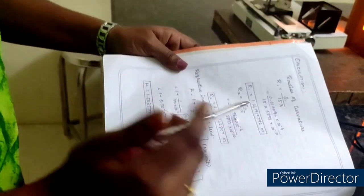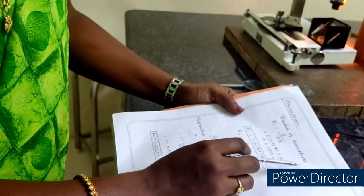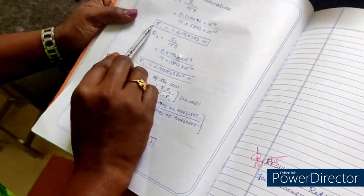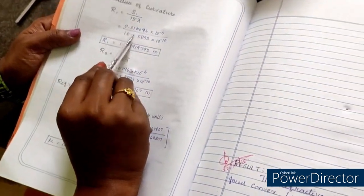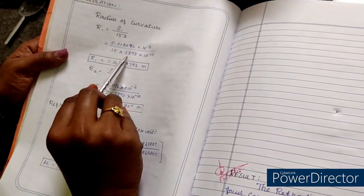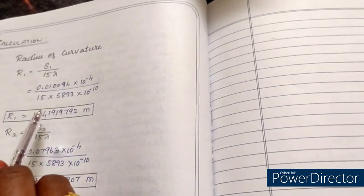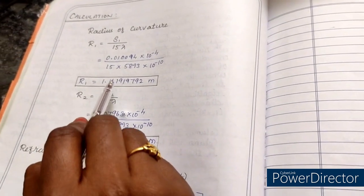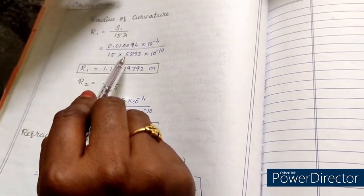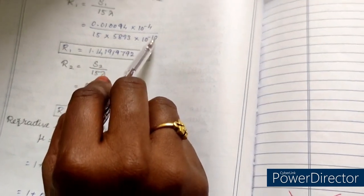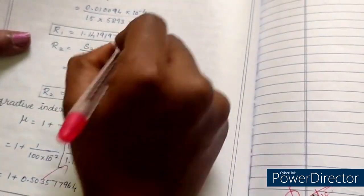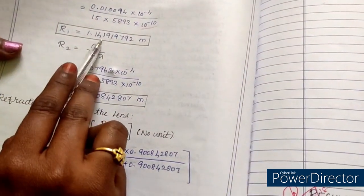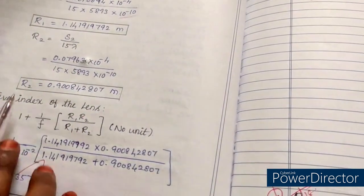Finally we are going to calculate the radius of curvature by the observing one. S1 and S2 we have already done. Then we just put in the formula 15 into lambda. The lambda is wavelength of the sodium vapor lamp. Sodium vapor lamp has the line, the sodium line having the wavelength of 5893 into 10 to the power minus 10, that is nanometer and Armstrong unit.